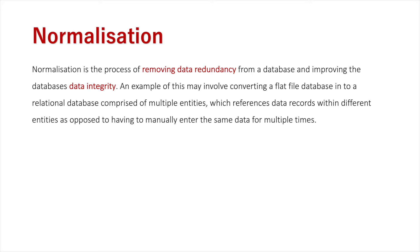An example of this may involve converting a flat file database into a relational database comprised of multiple entities, which references data records within different entities as opposed to having to manually enter the same data multiple times. That's essentially what redundancy means — the same data being entered into the system multiple times. Instead, we can enter it in one location of a relational database, reference that entity, and pull that data over through relationships.